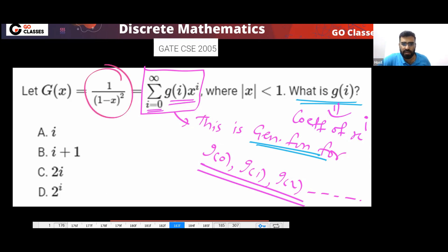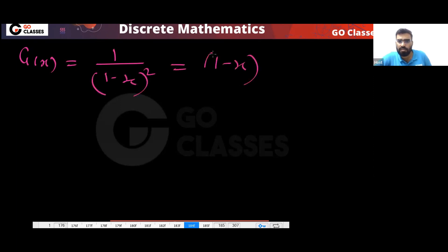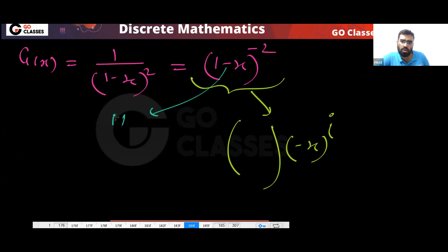This is very easy now — extremely easy, just a cakewalk. In this you need to find the coefficient of x^i involving a minus sign. Please note this — don't forget about this minus. Don't forget about this minus.